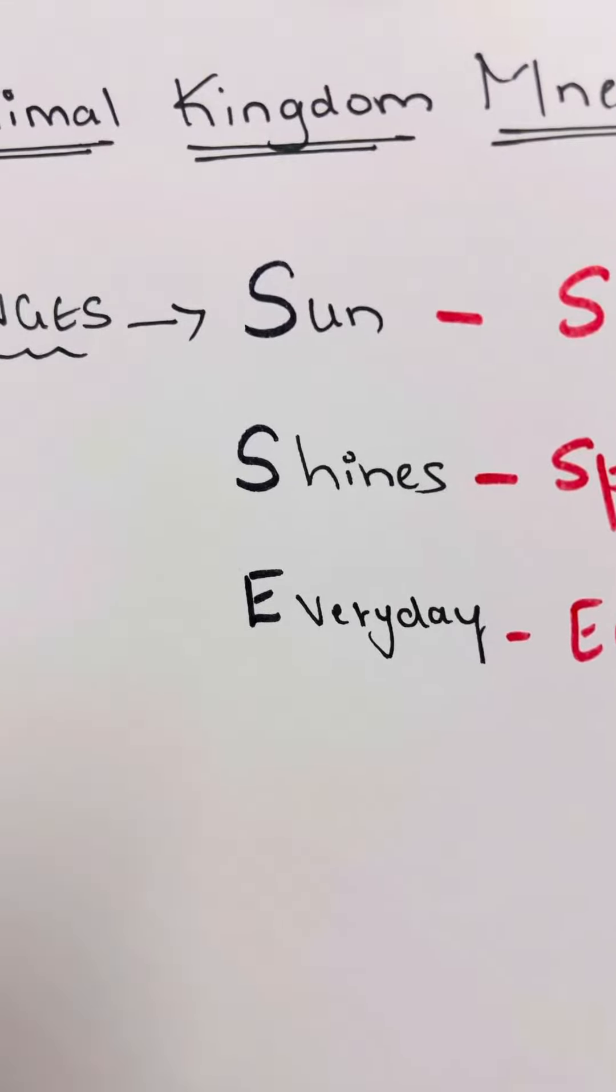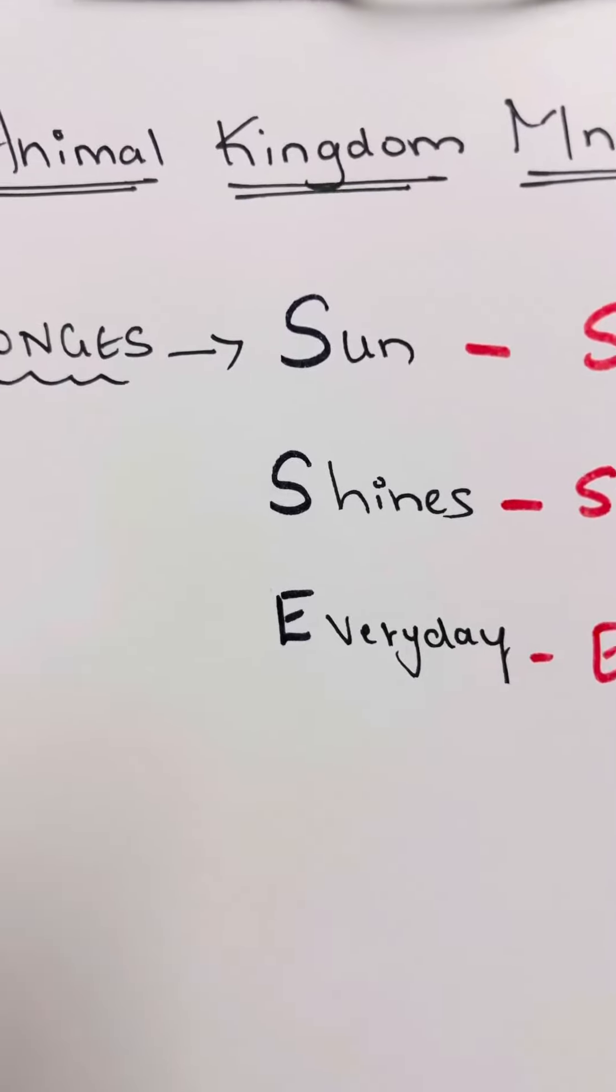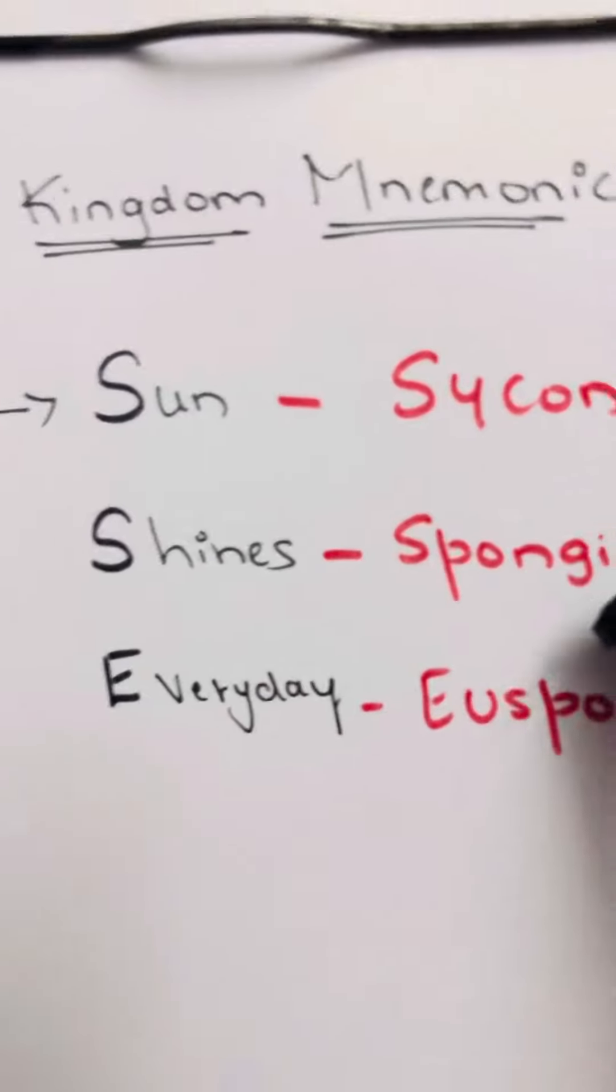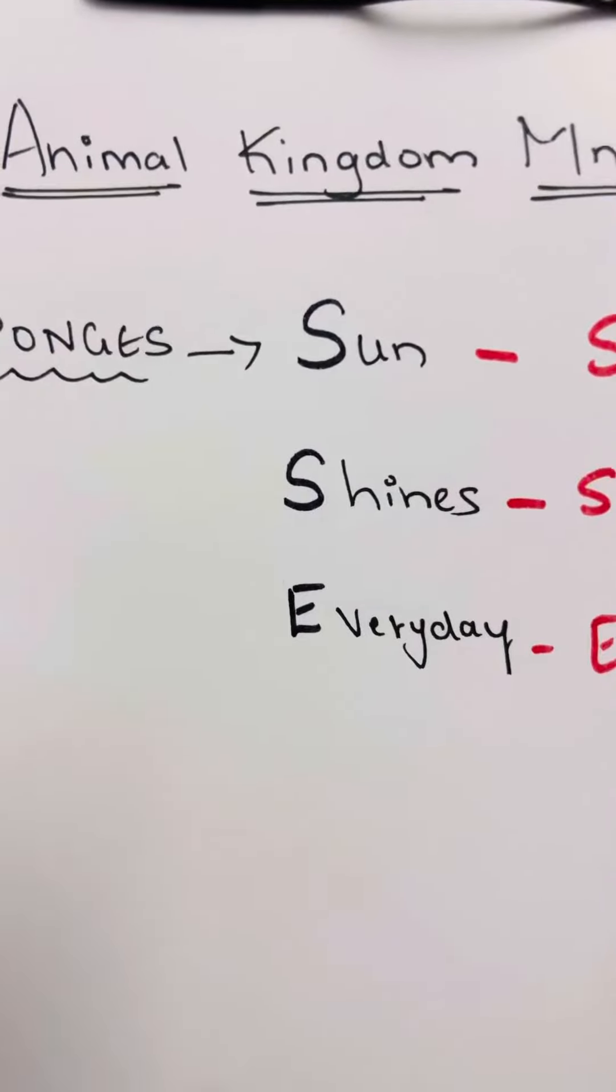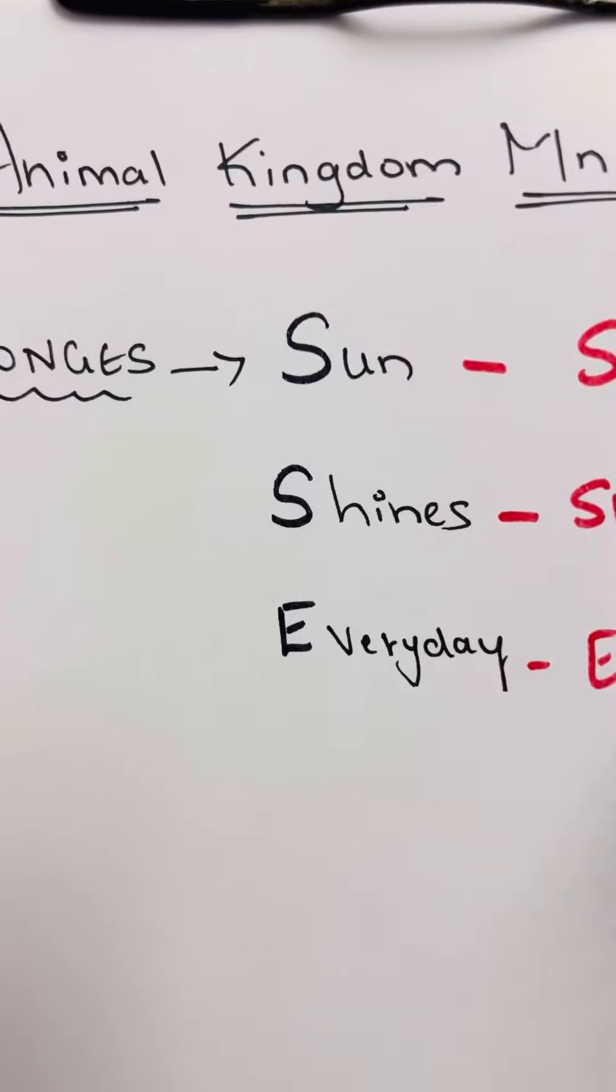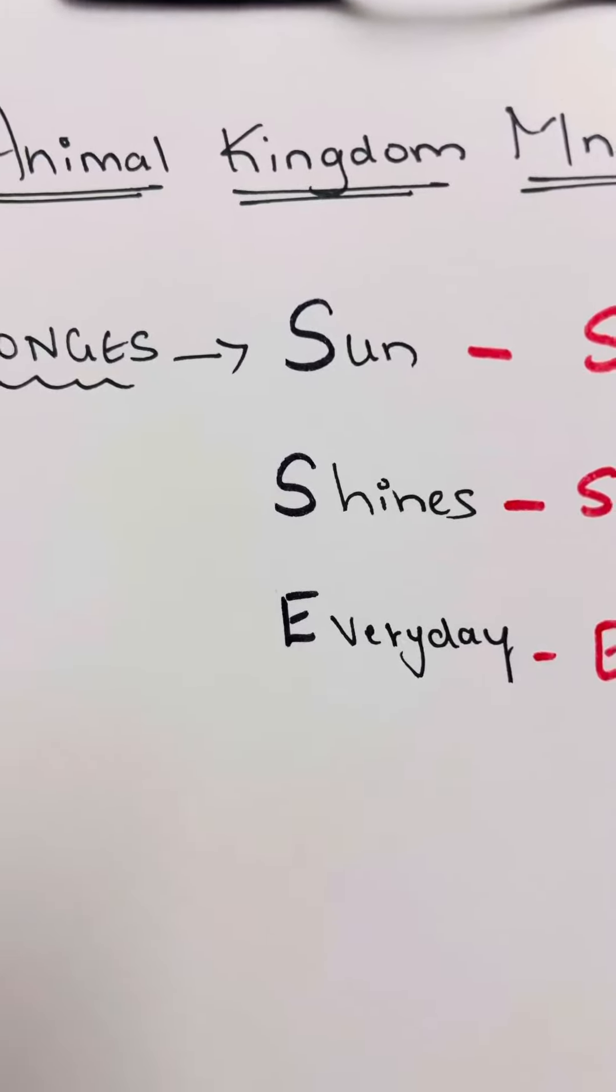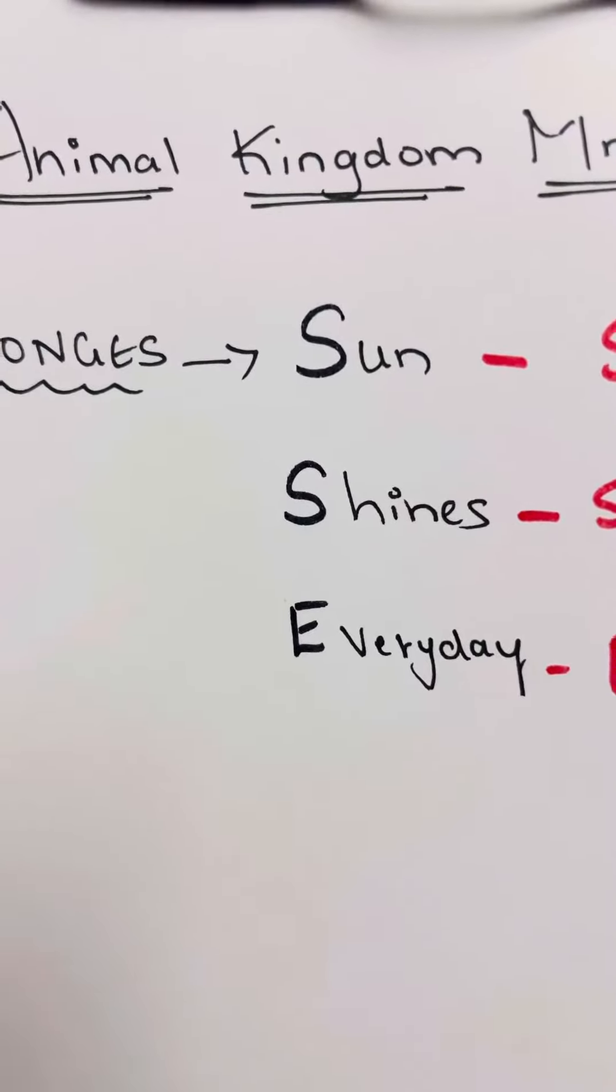Hi everyone, welcome to my YouTube channel at Need Biology. So now I'm here with you with the Animal Kingdom mnemonic. As there are different invertebrate phyla like Porifera, Coelenterata, Ctenophora, etc., and all phylums have examples of different animals.